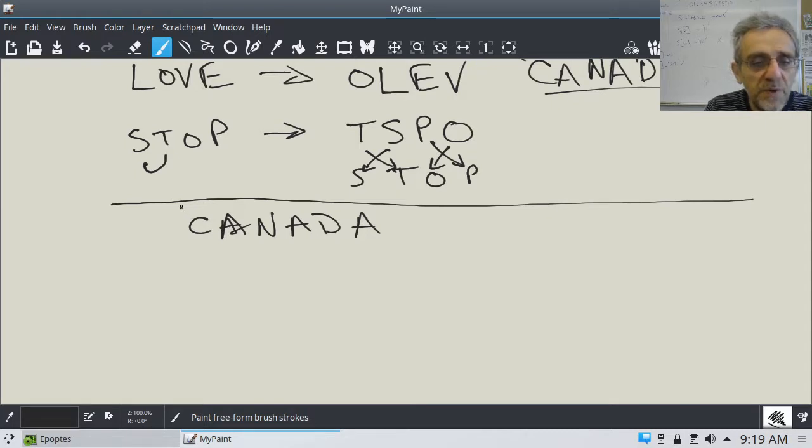So the first thing we know we want to do is that we need to take two letters at a time. So how can we, for example, let's just start with the first two letters. How would we get the first two letters? So, now remember, Canada is six letters long, but it has to work for any even number.